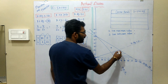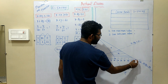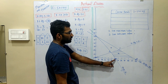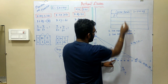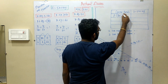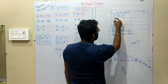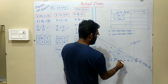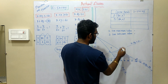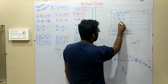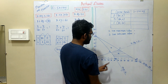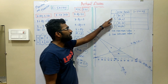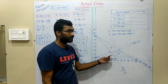The feasible region is bounded by four corner points. I'll name them A, B, C, and D. Point A is at (60, 0), point B is at (120, 0), point C is at (60, 30), and point D is at (40, 20). Note there may be some small inaccuracies since this is not an exact graph — an exact graph would give the correct answers.